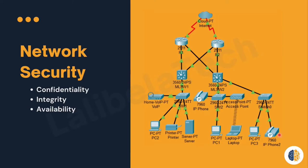Securing the network infrastructure includes physically securing devices that provide network connectivity and preventing unauthorized access to the management software. Here, router 1, router 2, and other devices should be physically protected — but not only physically protected, also logically protected. If an administrator wants to configure the devices, he or she has to use certain credentials, like username and password. Network administrators must also protect information contained within packets being transmitted over the network and information stored on attached devices — meaning information in transit and information at rest. In order to achieve the goals of network security, there are three primary requirements, and we call this the CIA Triads of Cybersecurity.